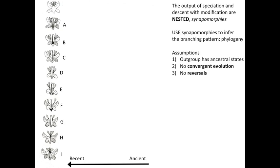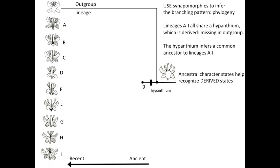Taking into account these three assumptions, we can now look for synapomorphies to infer the relationships among these lineages. We see that lineages A through I all have a hypanthium, which is missing in the outgroup. The hypanthium infers lineages A through I share a common ancestor. Because nine lineages share the character, the common ancestor goes far back in time.